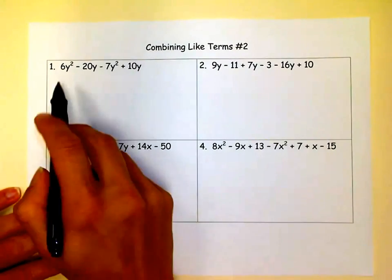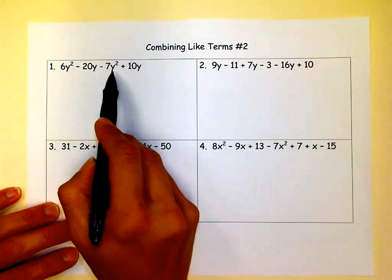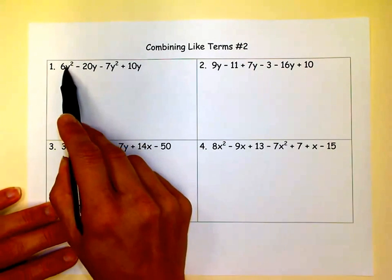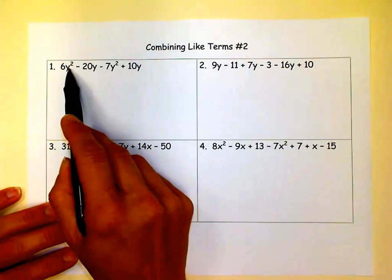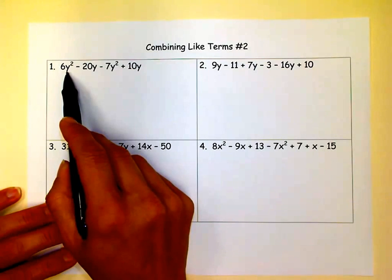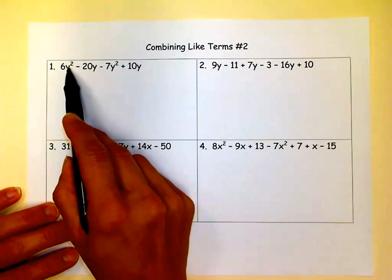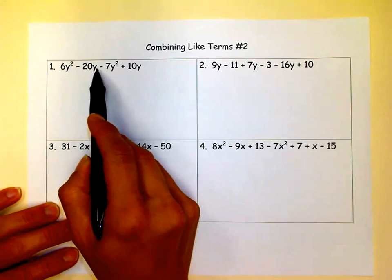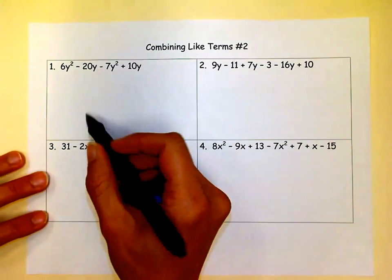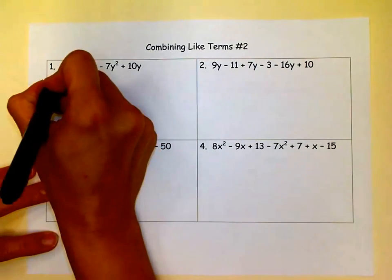Greetings, M squared. We're going to combine some more like terms. So just a reminder, you can only combine Y squared with Y squared. The variable part of each term has to be exactly the same in order to combine it with another term. So even though there's a Y there, it's not a Y squared. So you cannot combine a Y squared with a Y. Remember, the variable parts have to be exactly the same. Let's get started.